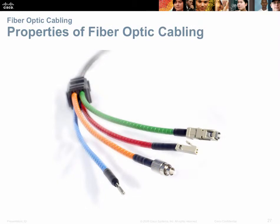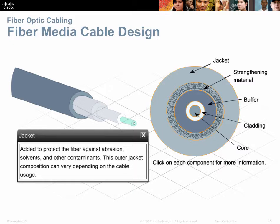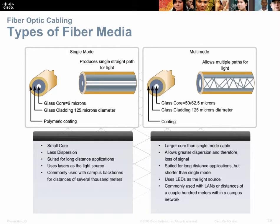Fiber optic cable is not prone to the problems of copper. It is not a large antenna, does not conduct electricity, and is not prone to interference from magnetic or radio frequency sources. A PVC jacket on the outside protects the inner glass from abrasion. Inside the glass, you have the core and the buffer. Single-mode fiber uses a 9-micron core, while multi-mode fiber uses a 50 or 62.5-micron core — a much larger core.